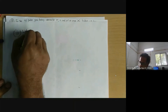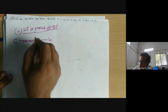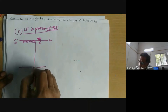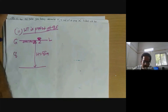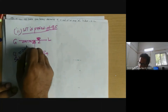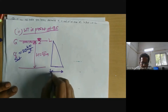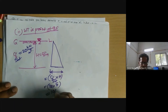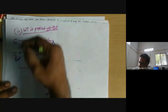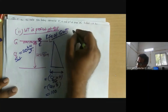Second case: if water table is present at the ground surface. This is the ground level — the water table is now at the ground level. We are considering the same soil layer, h = 5 meters, but this time gamma saturated is assumed to be 20 kN/m³. Total stress = gamma_sat × h = 20 × 5 = 100 kN/m². Groundwater table has risen to ground surface.